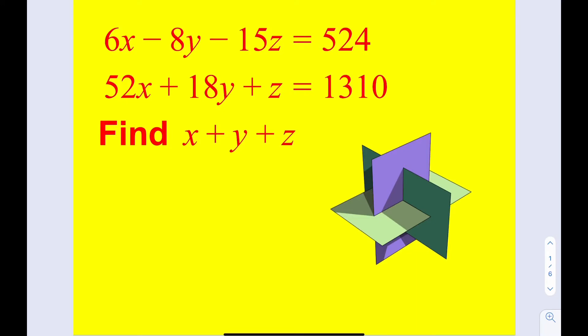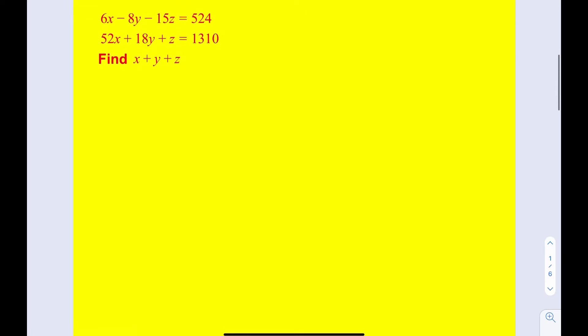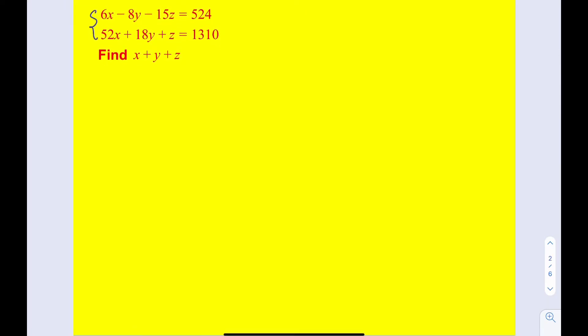We are supposed to find x plus y plus z from the given equations. We do have a system in two equations and three variables. So if this was a Diophantine equation, we would be looking for integer solutions, but that's not the case. So how can we possibly get x plus y plus z without actually finding x, y, z individually, because we're not able to find them here.